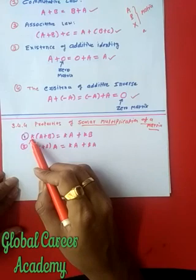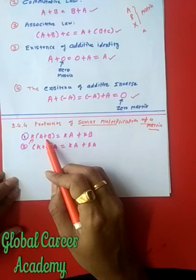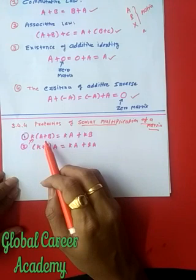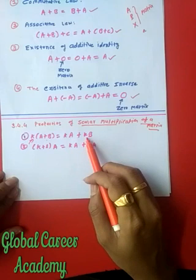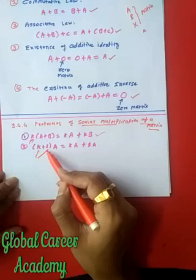Properties of scalar multiplication are also very easy. Let K be a scalar quantity, and let matrix A and matrix B be given. Then K times (A plus B) equals scalar K multiplied with matrix A, plus scalar K multiplied with matrix B.